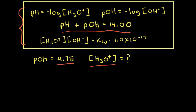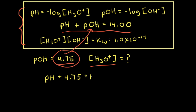pH plus pOH is equal to 14.00, and we have the pOH equal to 4.75, so we can plug that into our equation. That gives us pH plus 4.75 is equal to 14.00, and solving for the pH we get that the pH is equal to 9.25.